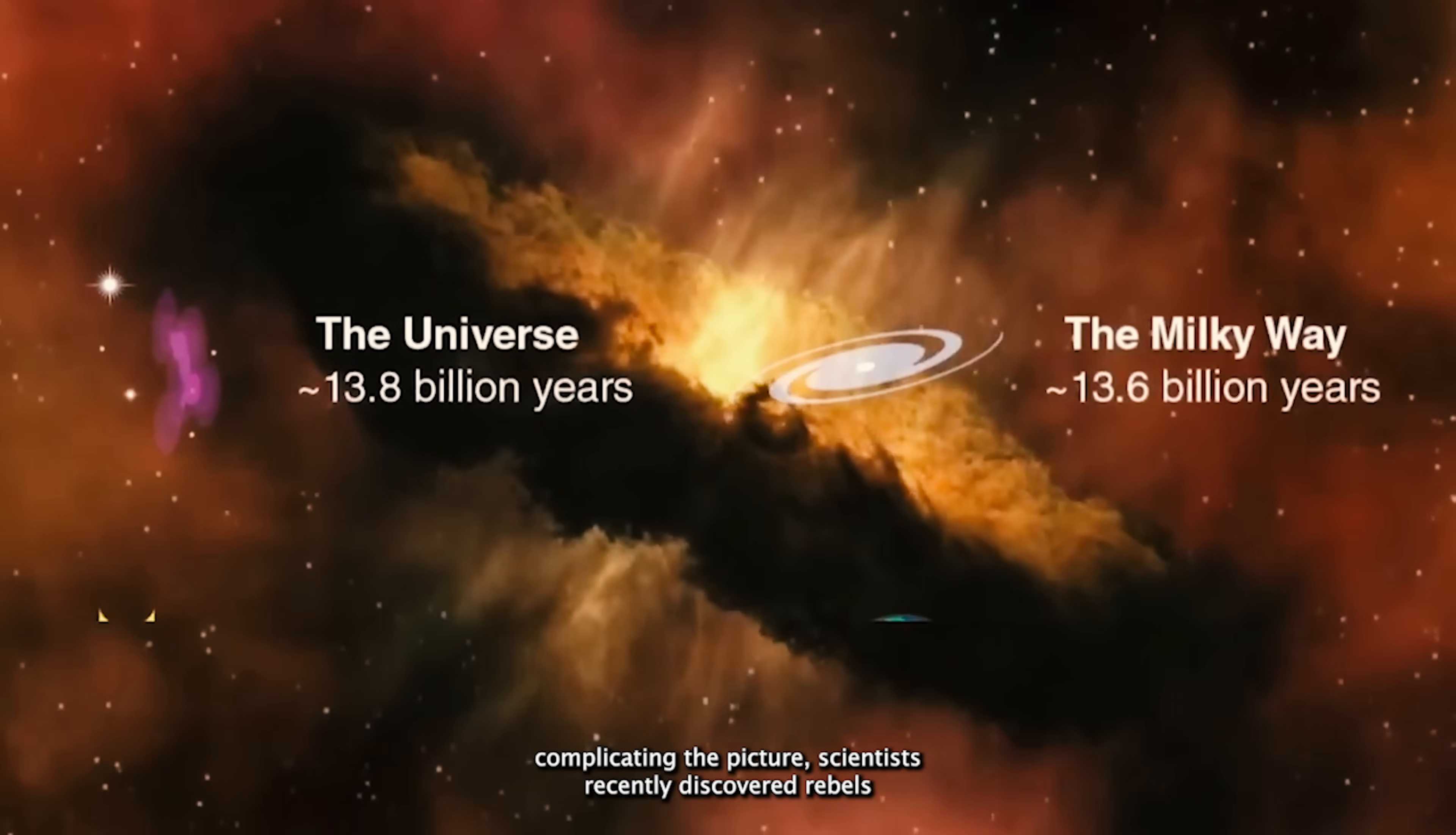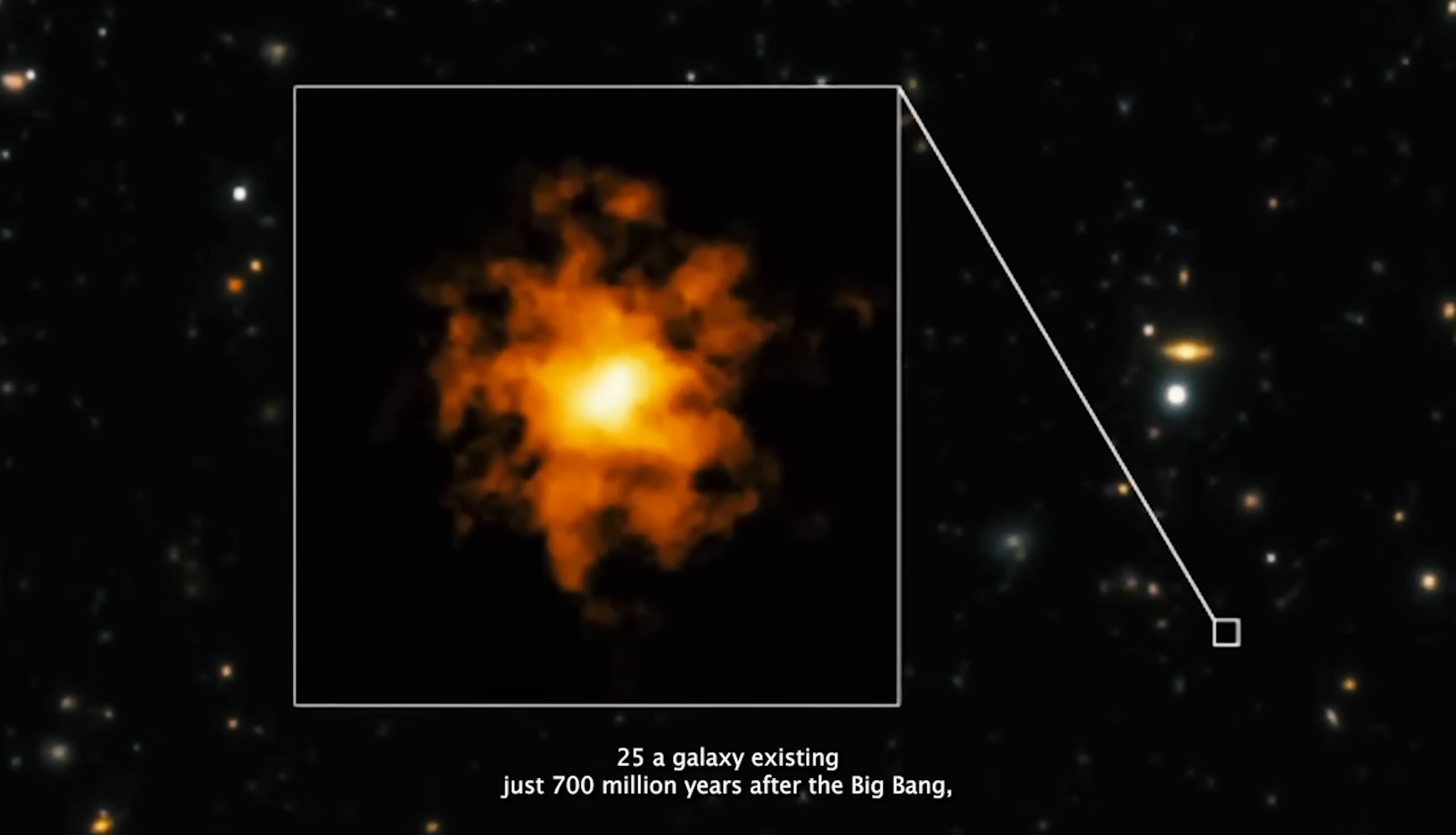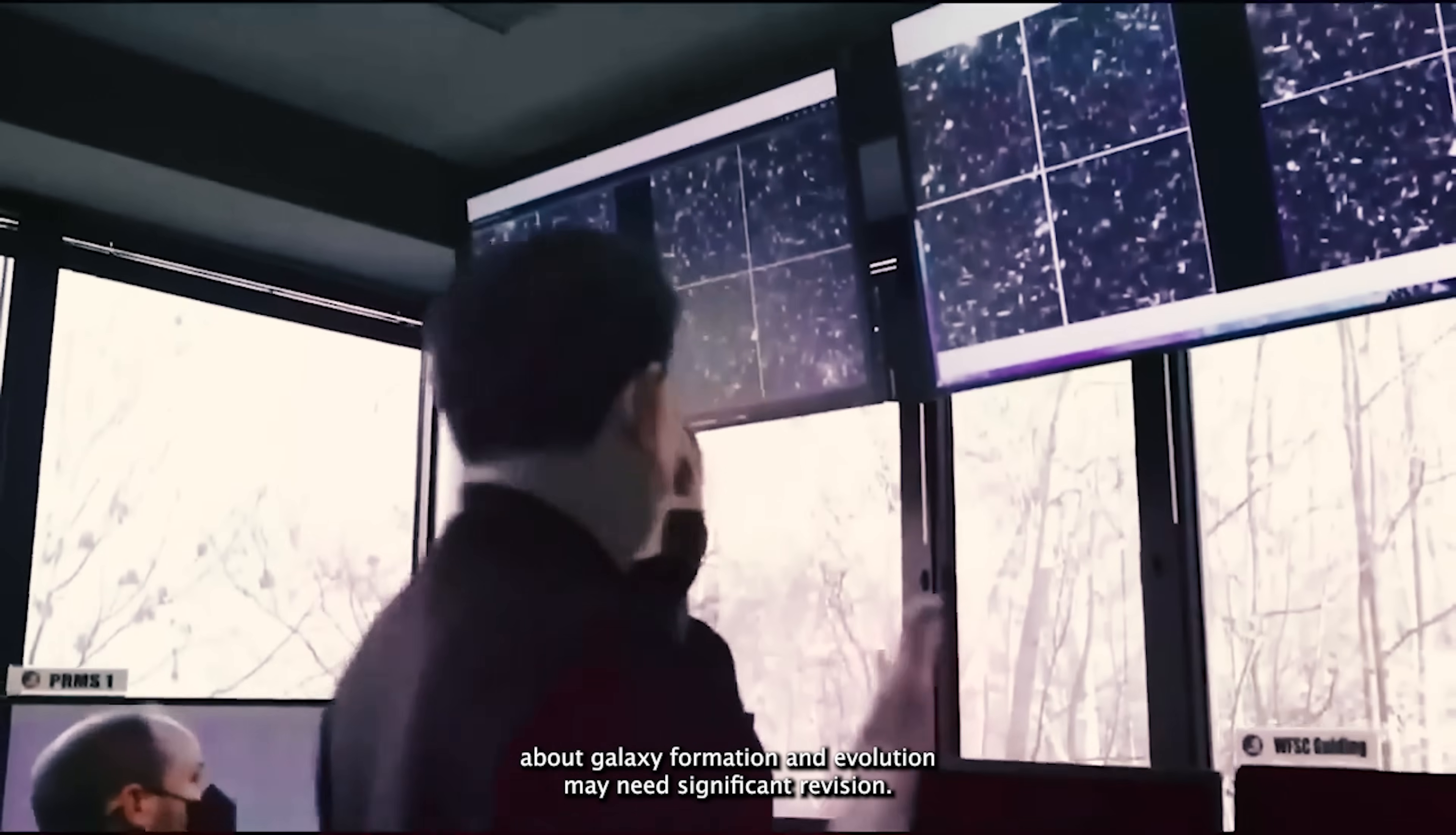Further complicating the picture, scientists recently discovered Rebels 25, a galaxy existing just 700 million years after the Big Bang, yet it closely resembles the Milky Way. This finding adds to the mounting evidence that current theories about galaxy formation and evolution may need significant revision.